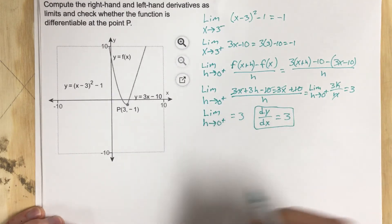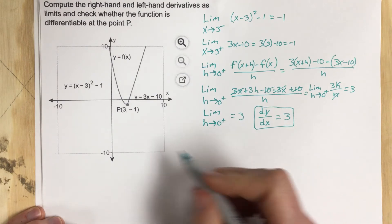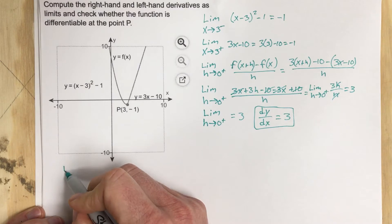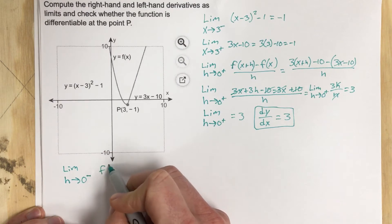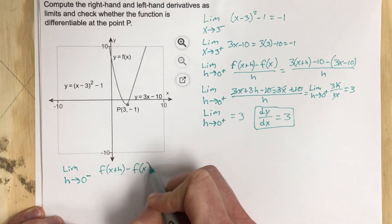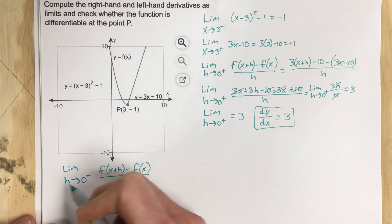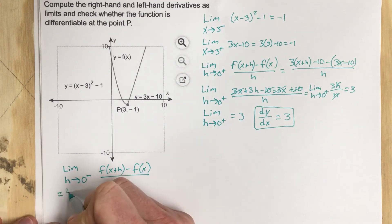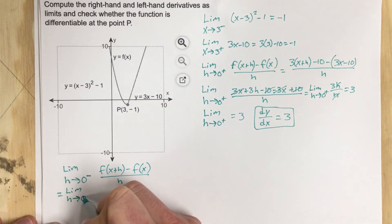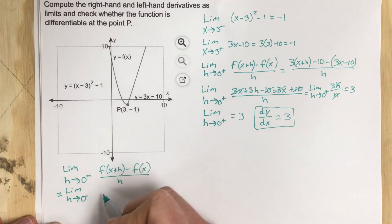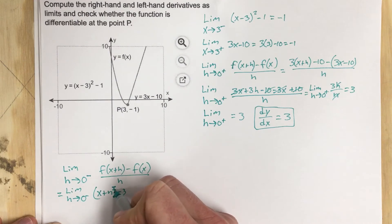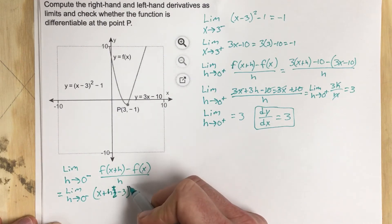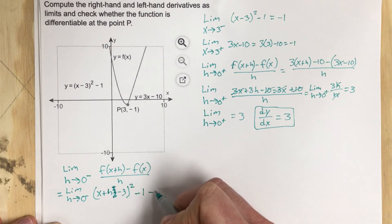Now that's the right side — let's do the left side. We take the limit as h approaches 0 from the left of [f(x+h) minus f(x)] all over h. When we plug in, we get (x+h minus 3) squared minus 1, minus the original function (x minus 3) squared minus 1, all over h.